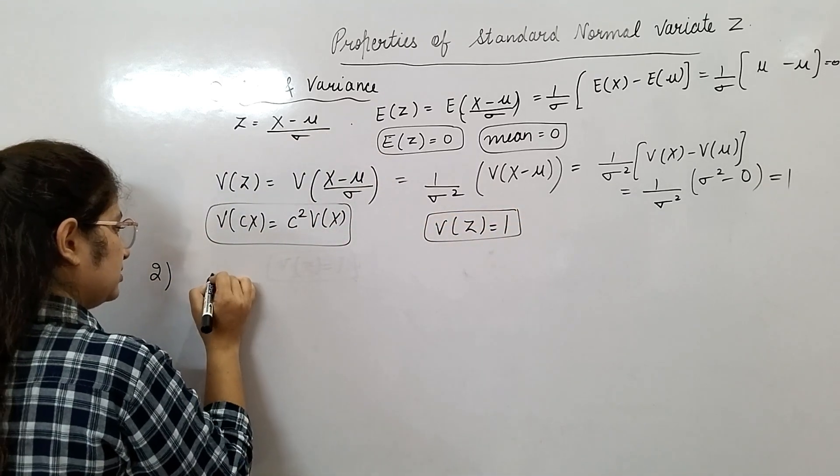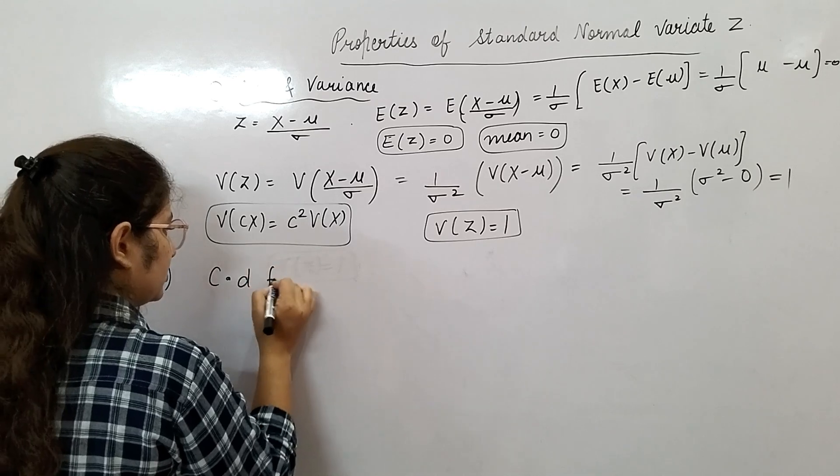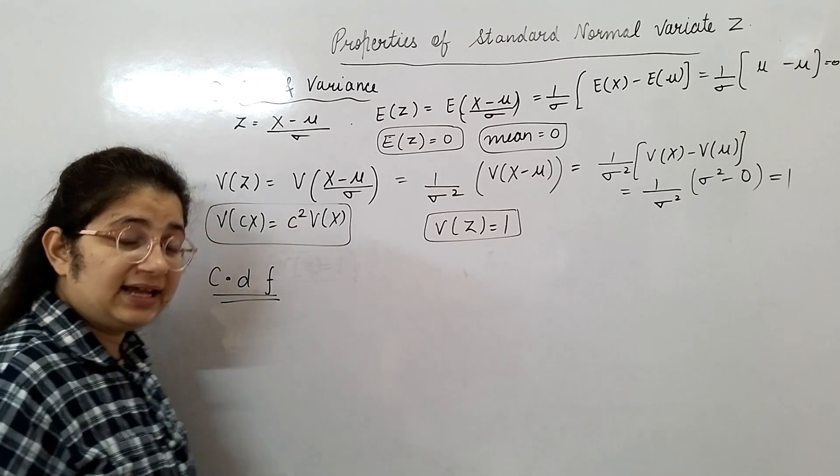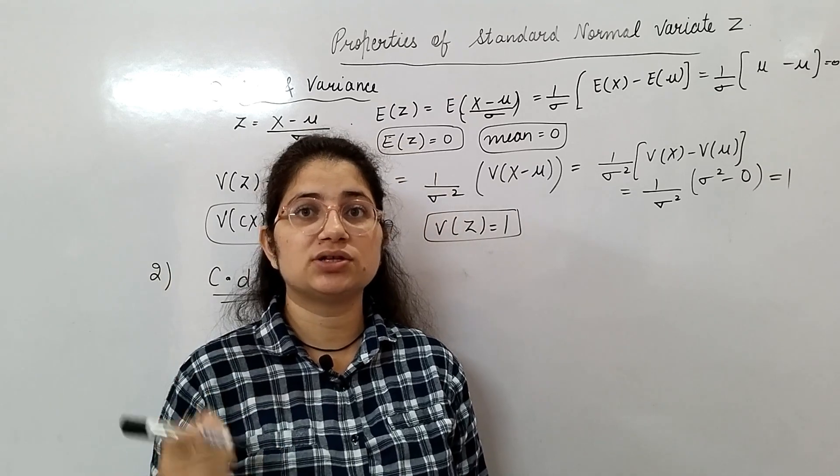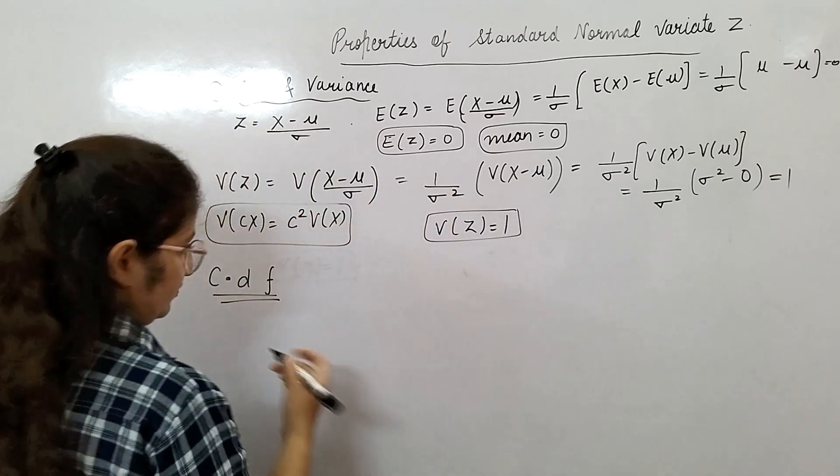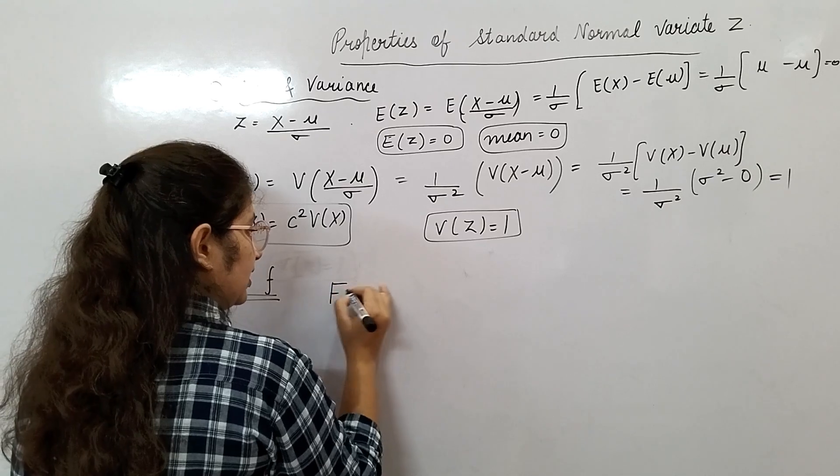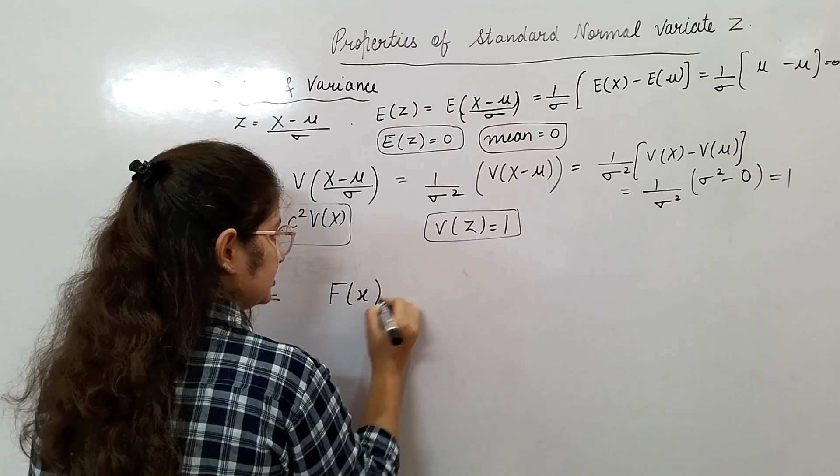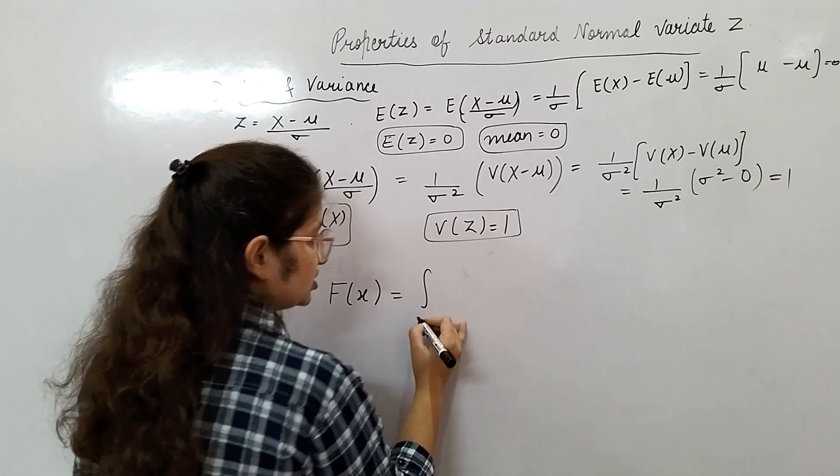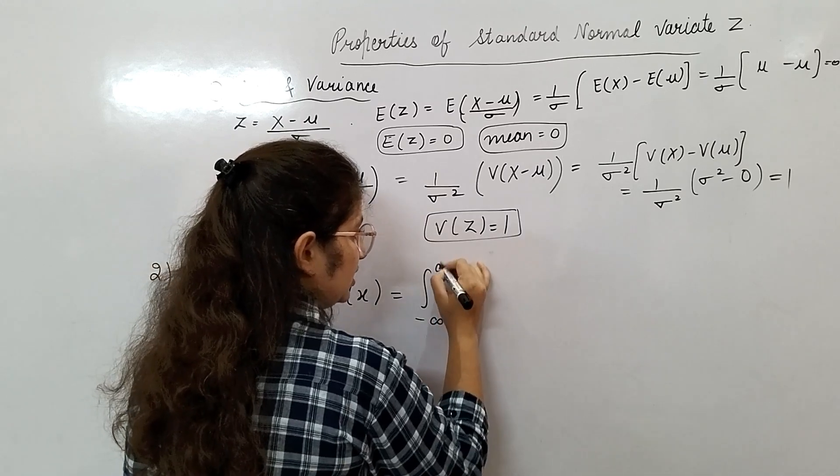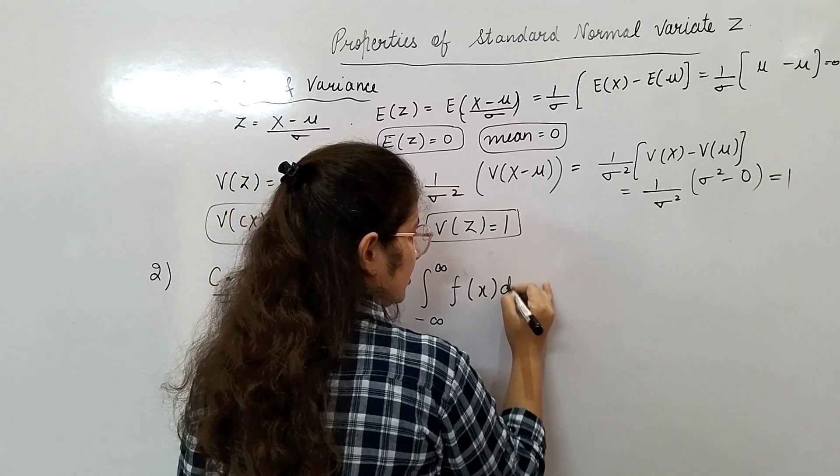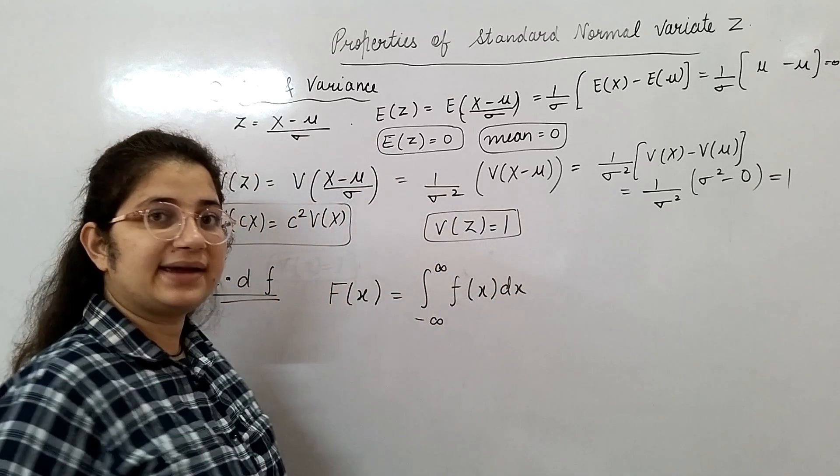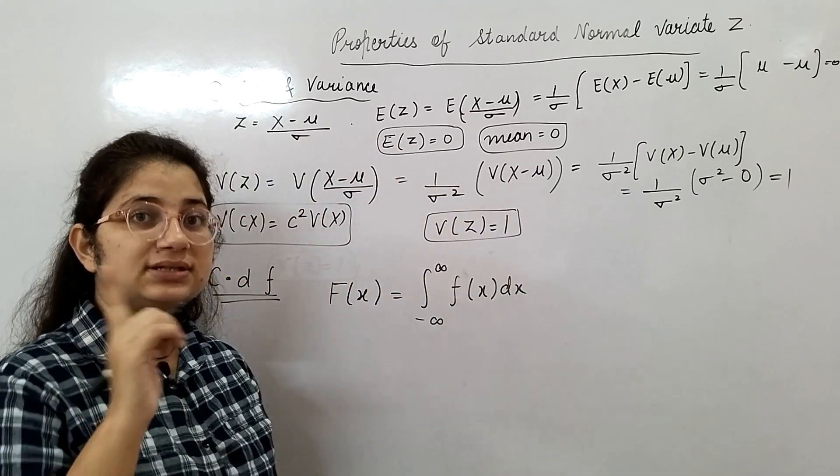Second property, I will find out the CDF function. If PDF function is given to you and you need to calculate the CDF function, you have to integrate. So capital F of X is given by integration of minus infinity to infinity.